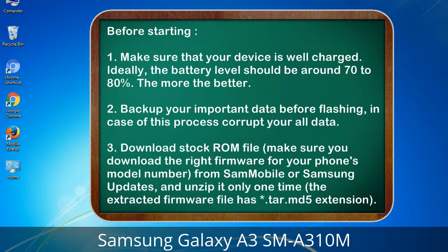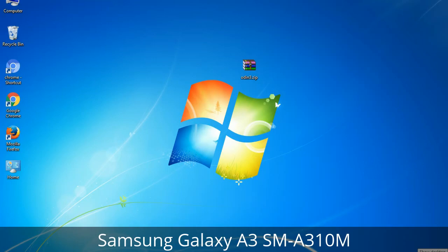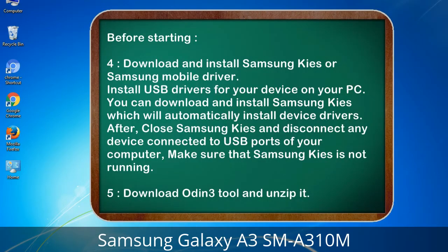3. Download the stock ROM file. Make sure you download the right firmware for your phone's model number — from Sammobile or Samsung Updates — and unzip it only one time. The extracted firmware file has a *.tar.md5 extension. 4. Download and install Samsung KIES or Samsung mobile driver to install USB drivers for your device on your PC. Samsung KIES will automatically install device drivers. After installing, close Samsung KIES, disconnect any device from USB ports, and make sure Samsung KIES is not running. 5. Download the Odin 3 tool and unzip it.